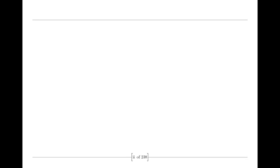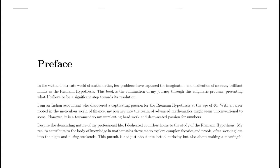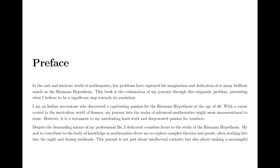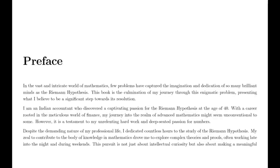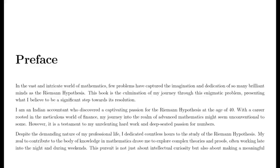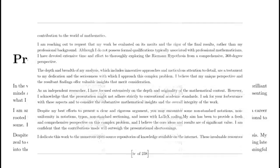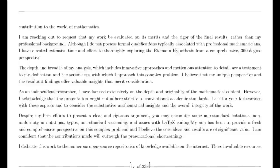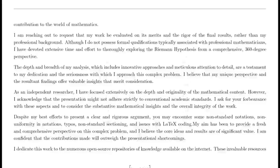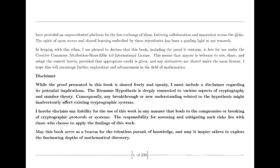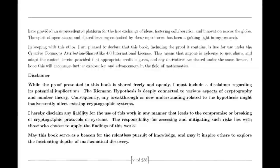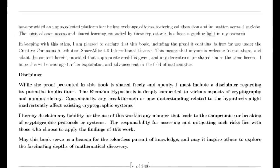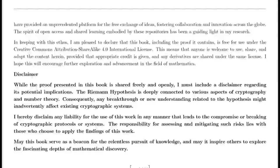Euler's initial work. We begin with the remarkable contributions of Leonard Euler. In the 18th century, Euler made groundbreaking discoveries in understanding infinite series. He introduced the idea that the harmonic series — the sum of the reciprocals of the positive integers — could be expressed as a product over prime numbers. This was a revolutionary insight, as it linked the harmonic series to the profound properties of prime numbers. Euler's formula was one of the first indications of the deep connections between primes and series.